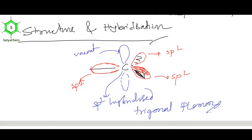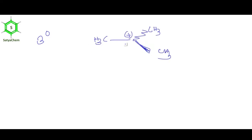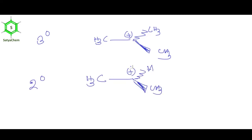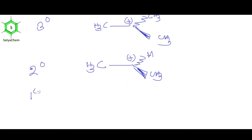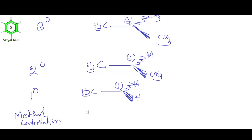Types of carbocations: In a tertiary (3°) carbocation, no hydrogen is attached to the central carbon. In a secondary (2°) carbocation, one hydrogen is attached to the central carbon. In a primary (1°) carbocation, two hydrogens are attached to the central carbon. In a methyl carbocation, three hydrogens are attached to the central carbon. The stability order is: 3° > 2° > 1° > methyl carbocation.